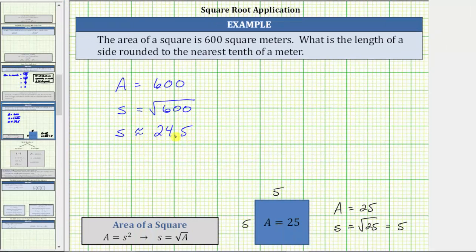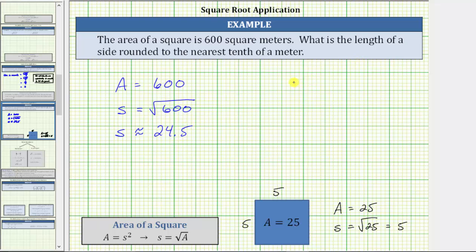So because S is approximately 24.5, the length of a side of the square is approximately 24.5 meters.